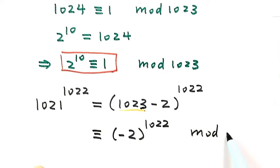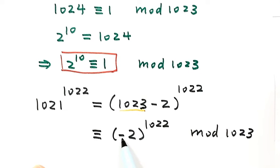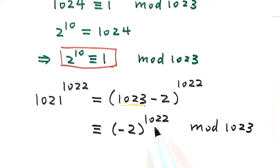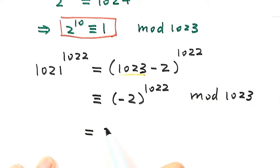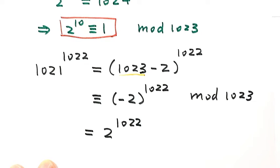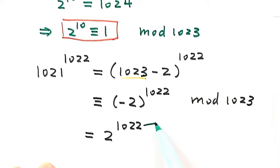When divided by 1023, negative 1 to an even power is positive. So this equals 2 to the power of 1022. For the exponent 1022, we can put it as 1020 plus 2.